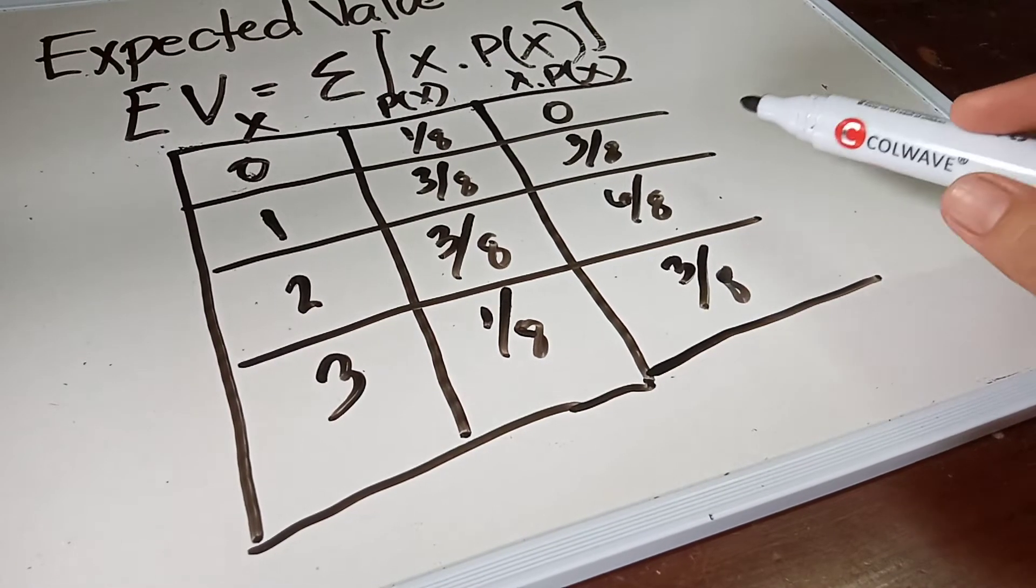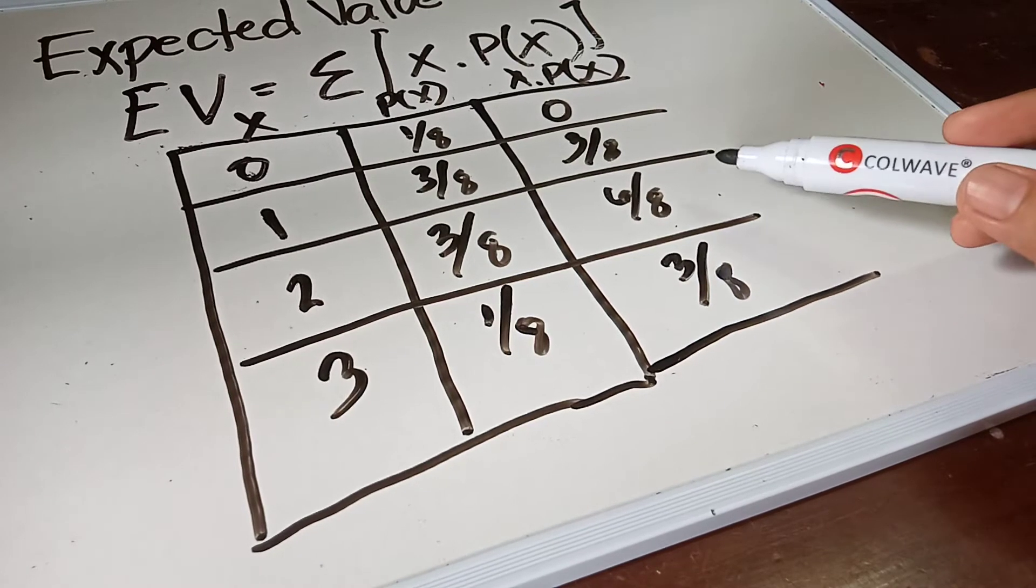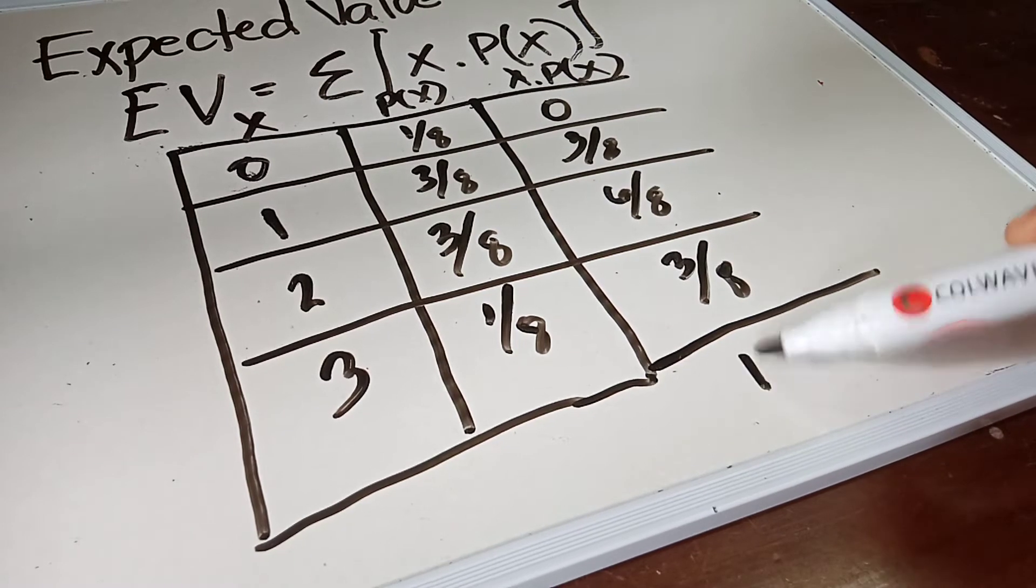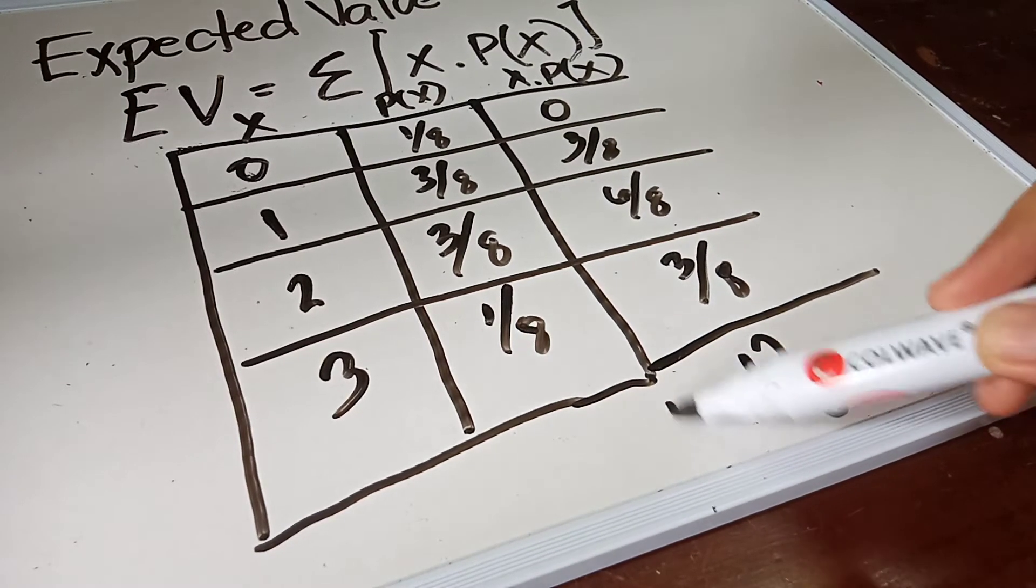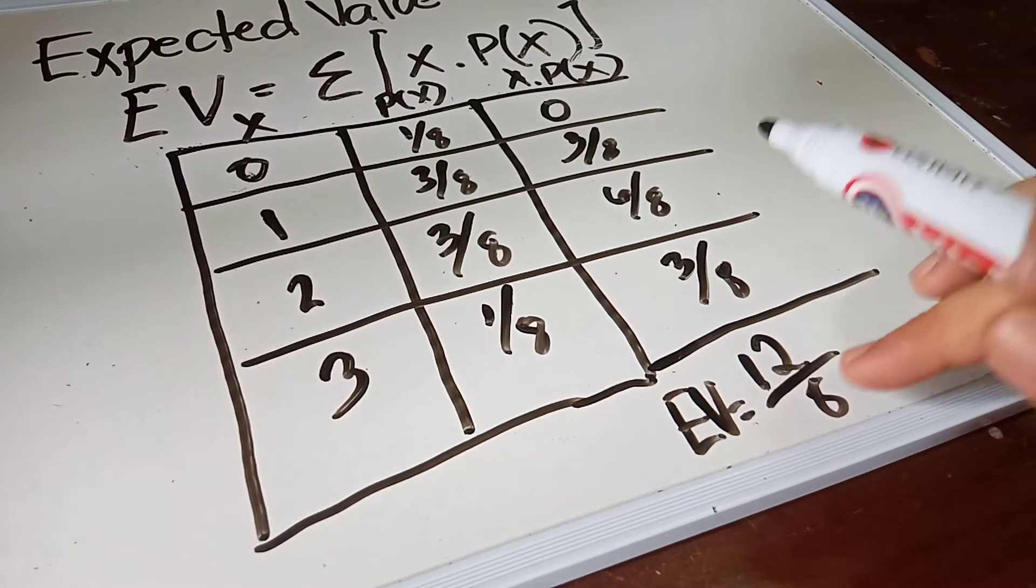Three over eight plus six over eight plus three over eight. We know that three plus six is nine, and nine plus three is twelve. So we have twelve over eight. So this will be our expected value.